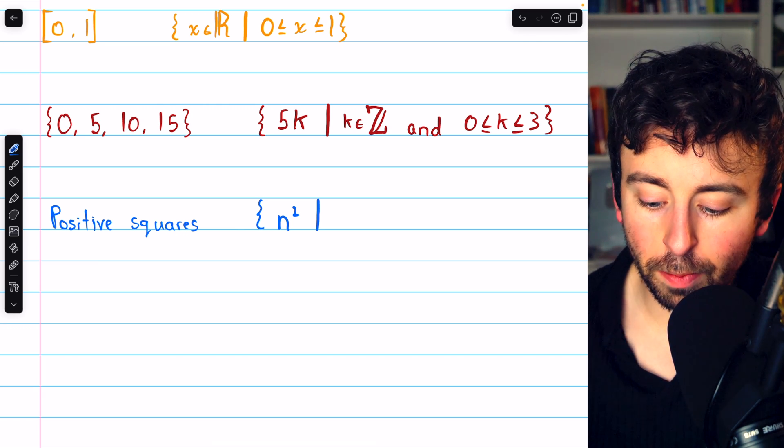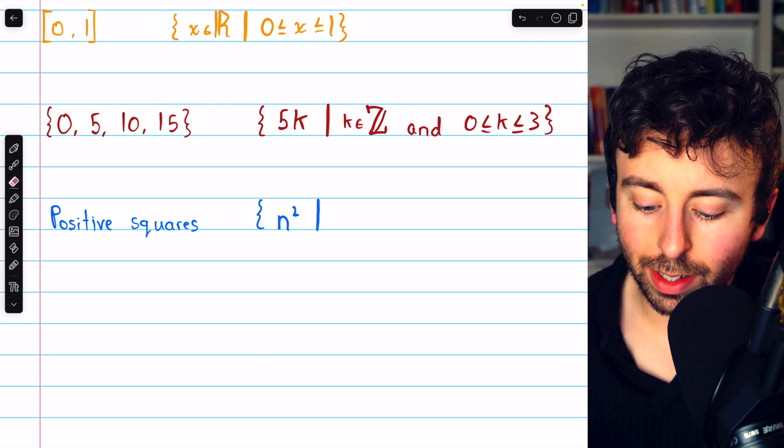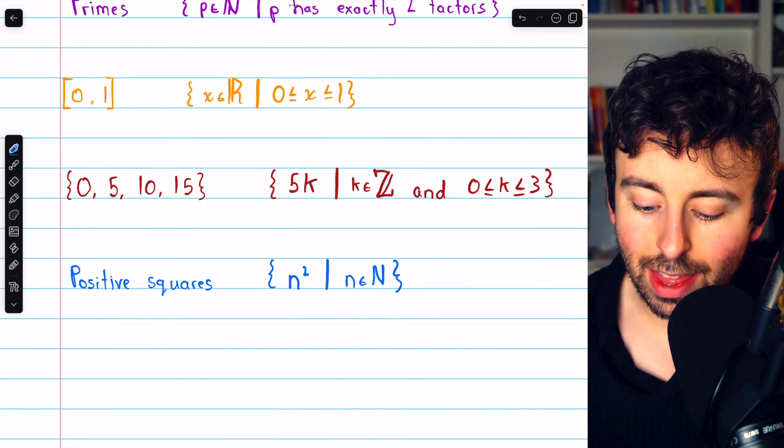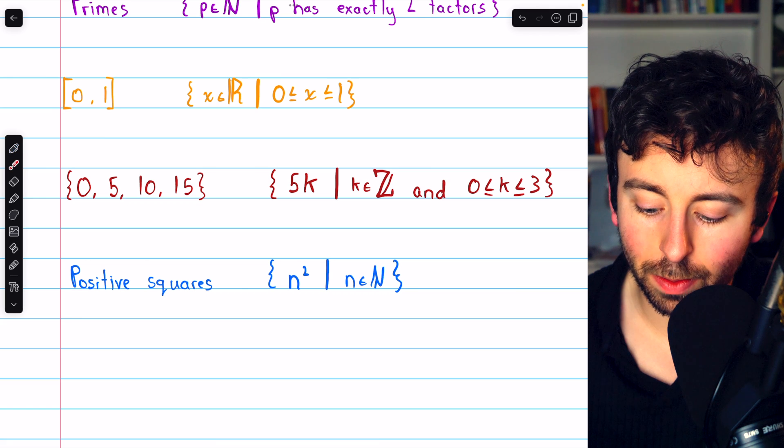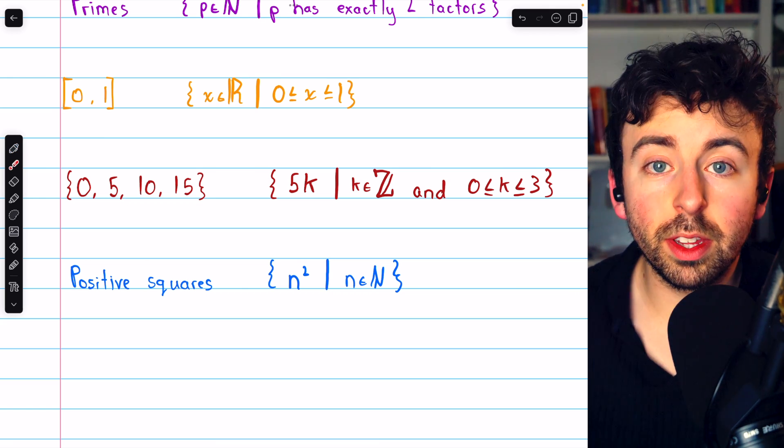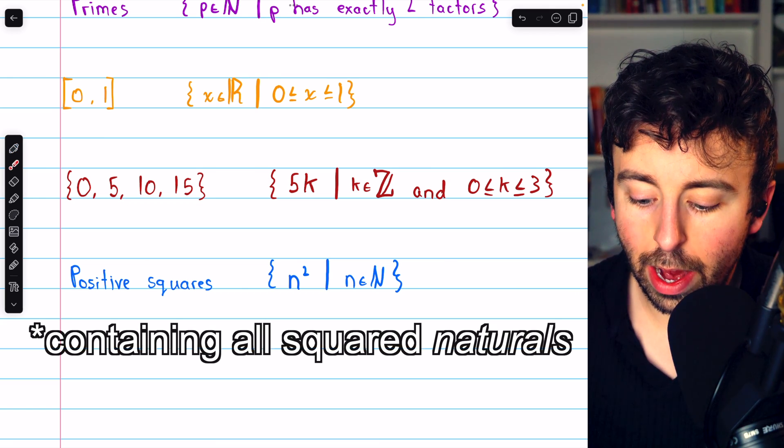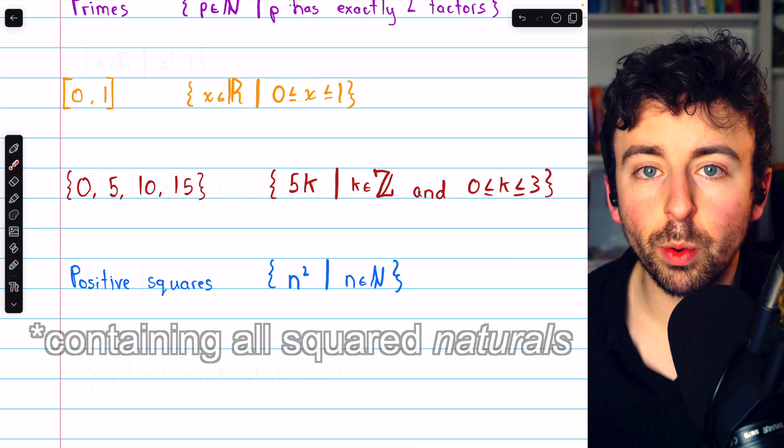Now, which squares in particular? The positive ones. So I want to say that n must be a natural number. That way, we don't get 0, which is a square number that's not positive. So this is a set containing all squared integers, which is all of the positive squares.